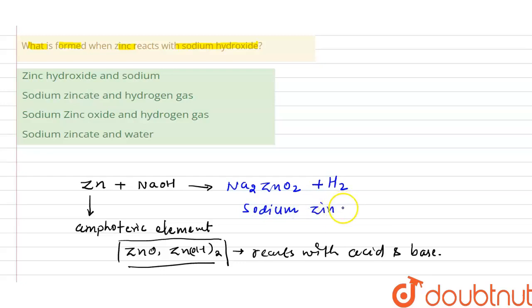So if you see the options: first is zinc hydroxide, now that is incorrect. Sodium zincate and hydrogen gas, that is right. Sodium zinc oxide and hydrogen gas, no that is not called sodium zinc oxide, basically that is called sodium zincate. Next, sodium zincate and water, no water is not forming here. So that means option B is the right answer of this question. So I hope you understood it well.